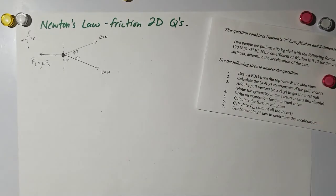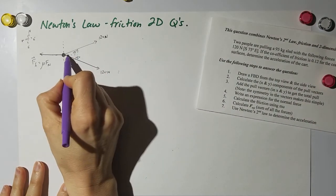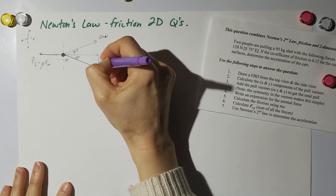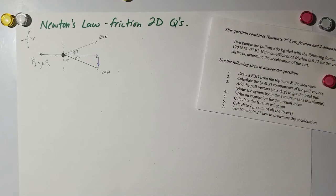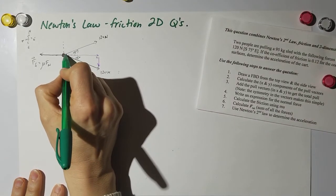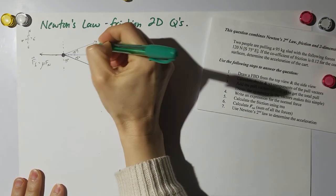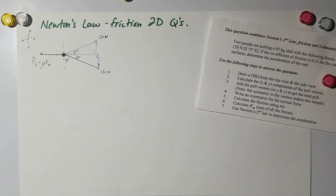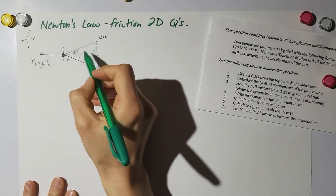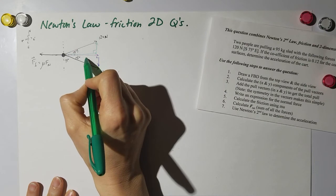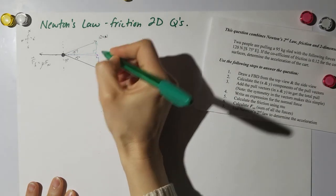If I was doing the components of these vectors, this vector right here is going to have a horizontal component and a vertical component. The other one as well will have a vertical and horizontal component. What I want you to realize is that because these are the same forces, 120 newtons and 120 newtons, these two vectors will be the same amount and these two vertical vectors will also be the same but in opposite directions.